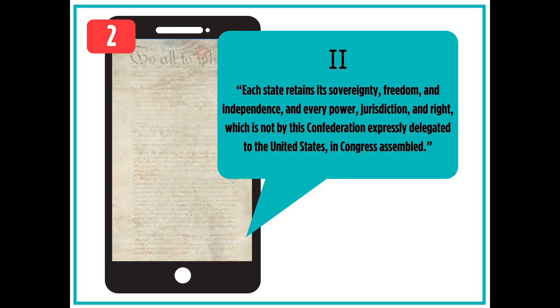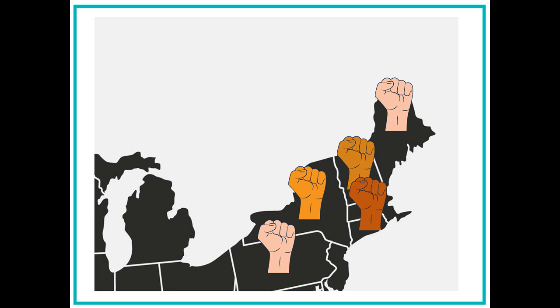The second article states: "Each state retains its sovereignty, freedom, and independence in every power, jurisdiction, and right which is not by this confederation expressly delegated to the United States and Congress assembled." This means that each state is independent and can make their own decisions, except in certain situations where the national congress has power over the states, like the power to declare war.